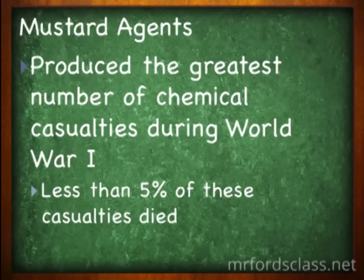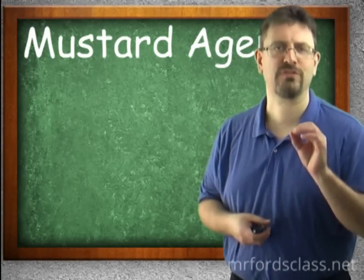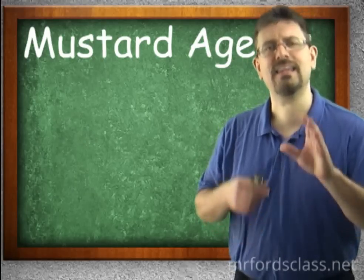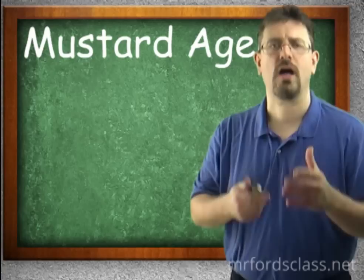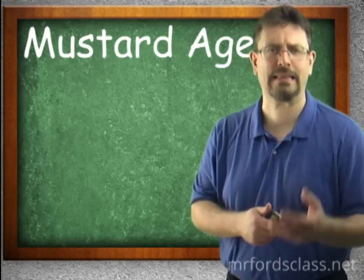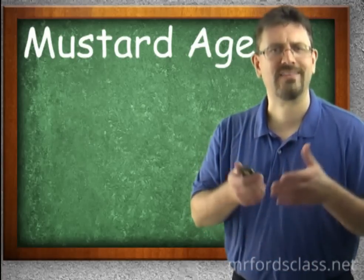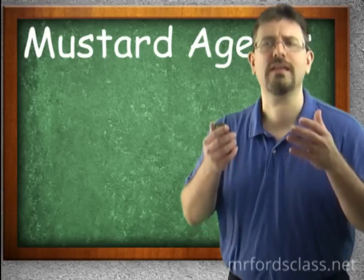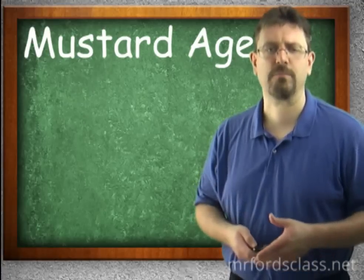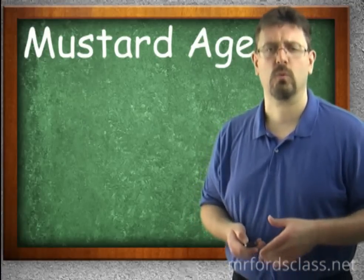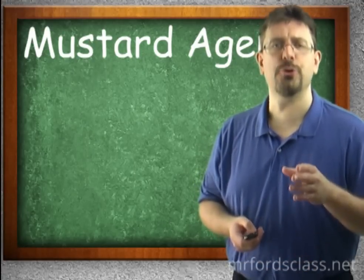Even though mustard agents produced the most chemical casualties, it only accounted for less than 5% of the casualties that died. When we're talking about these kinds of agents, we have to start talking more analytically — percentages and death rates. So as far as chemical weapons go, this didn't cause a lot of death. It hurt a lot of people, but accounted for less than 5% of total casualties that died during World War I. In our next video, we're going to take a look at the very deadly nerve agents.